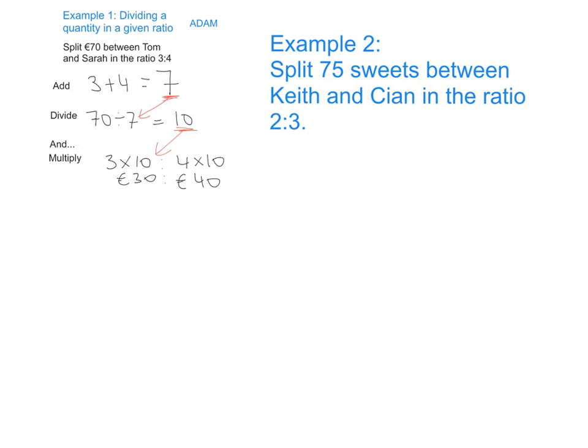So for example number 2, I would like you to have a go at splitting 75 sweets between two people, Keith and Keane, in the ratio 2 is to 3. Good luck!